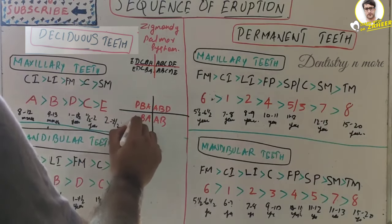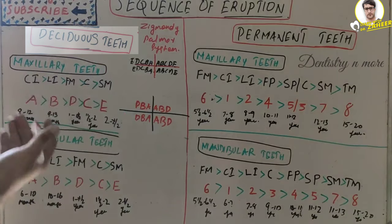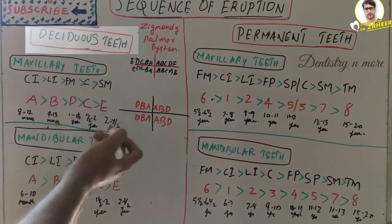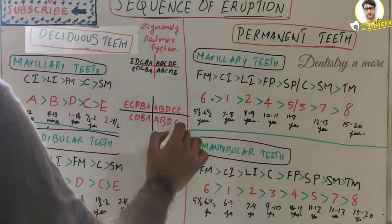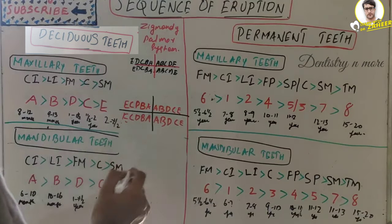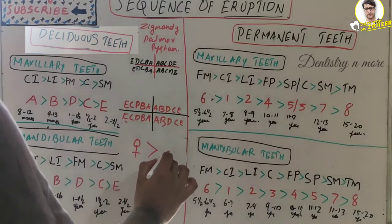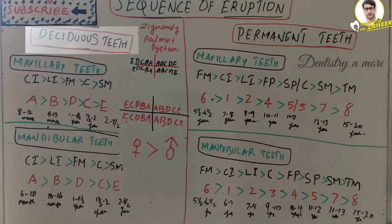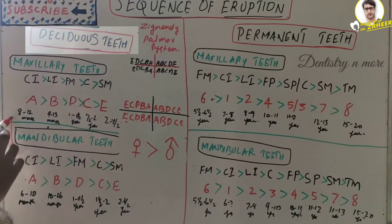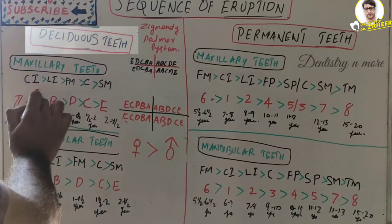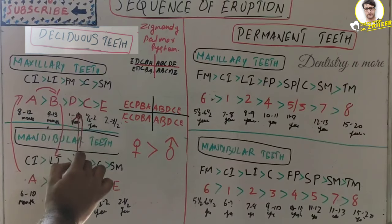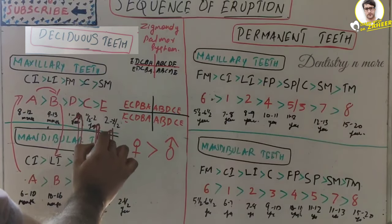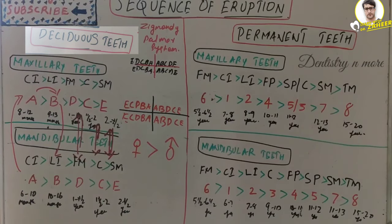The first molars erupt at almost the same time in both maxilla and mandible. The canines and second molars also erupt at almost the same time. It is commonly noted that the female gender tends to have earlier eruption than the male gender. The overall combined sequence is: lower central incisor, upper central incisor, upper lateral incisor, lower lateral incisor, then the rest of the teeth erupt at roughly the same time with no strong arch predilection.